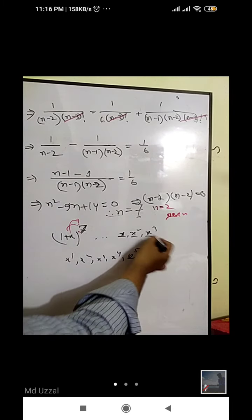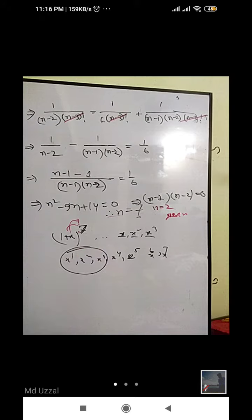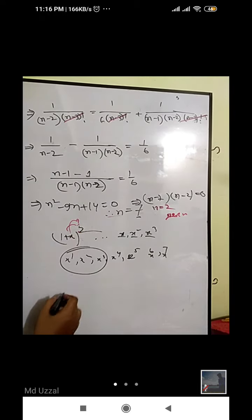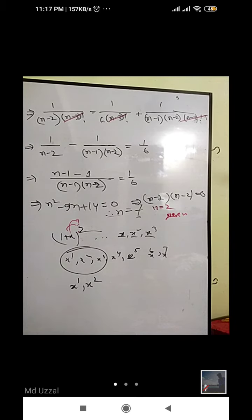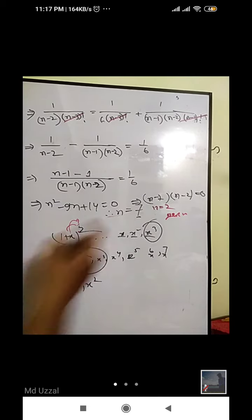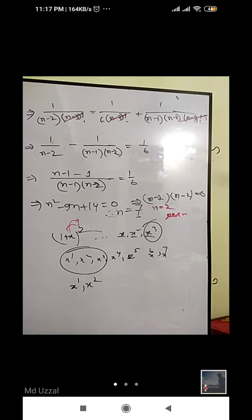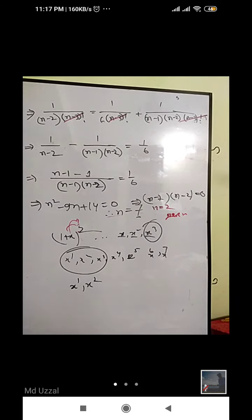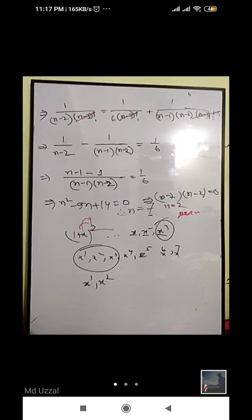You may have x squared — the answer is x squared. So, what do you think? n equal to 2 is equal to 1 plus x square. x cube is equal to x cube? No. So, n equal to 2 is equal to x square. We will see the plus square.